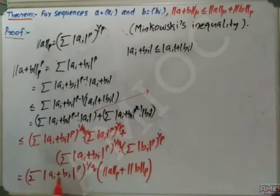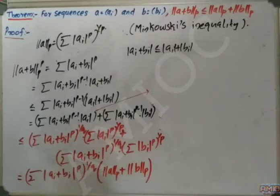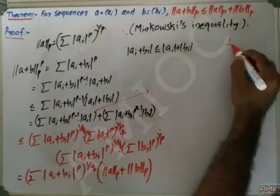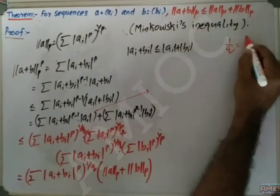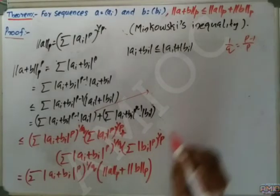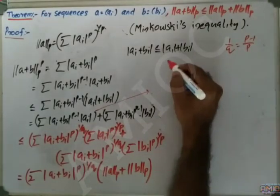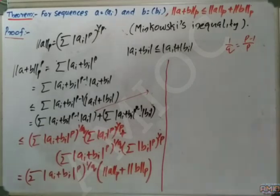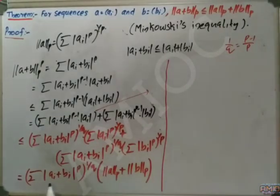Now, what is 1/q? We have 1/q = (p−1)/p. So we need to handle the exponent carefully. We have summation |a_i + b_i|^p all raised appropriately.